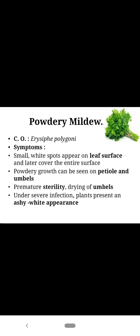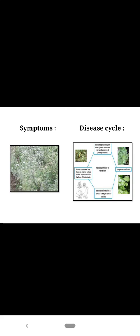Symptoms: the pathogen attacks on the leaf, then petiole and umbels. On the leaf, it forms a whitish fungal growth, and the entire leaf area gets covered with fungal growth. It also attacks on the petiole and umbels. In severe cases, premature sterility occurs, umbels get dry, and the whole plant looks ashy white in appearance.